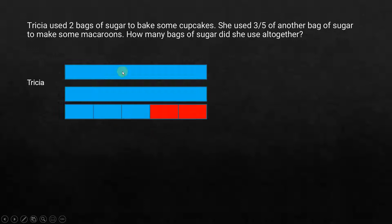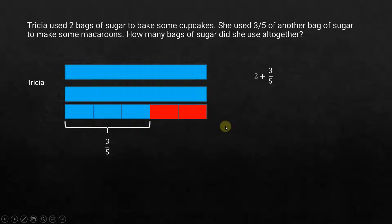So she has two full bags and 3 over 5 of the third bag. If we want to write this, we can write it as 2 plus 3 over 5, which can be written as 2 and 3 over 5.